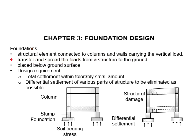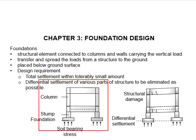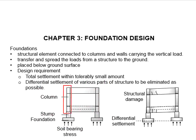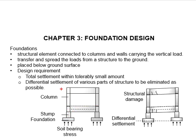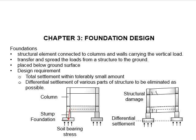The foundation is normally placed below the ground surface. For a typical structure, the vertical components that transfer the vertical loads from the upper story to the lower story are known as the columns. Below the columns and below the first floor beams and slab, it is known as the stump. The stump sits on the foundations, and the foundations transfer the vertical loads to the soil.